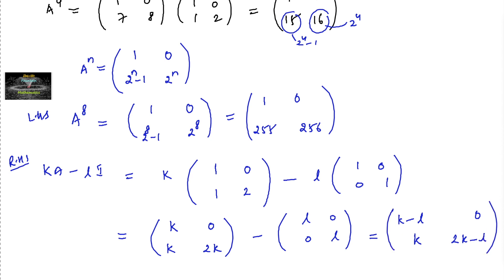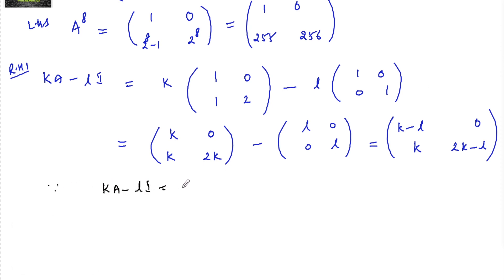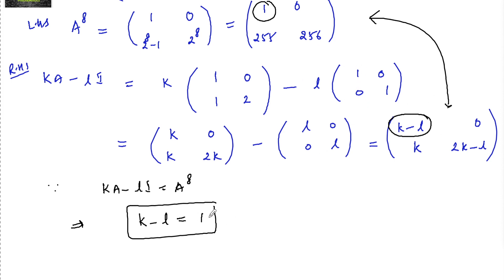Comparing LHS = [[1,0],[255,256]] with RHS = [[k−l, 0],[k, 2k−l]], we can directly read off that k − l = 1. We can verify: taking k = 255 and checking 2k − l = 256 is consistent. But the question asks only for k − l, so the answer is k − l = 1.